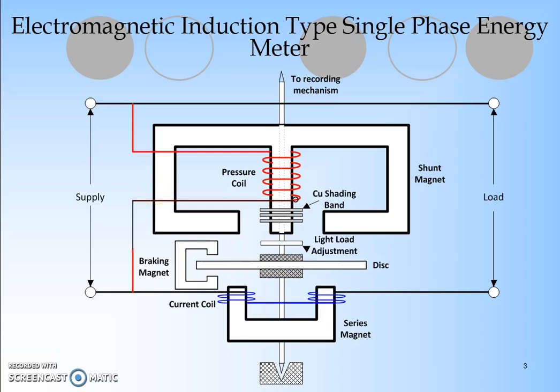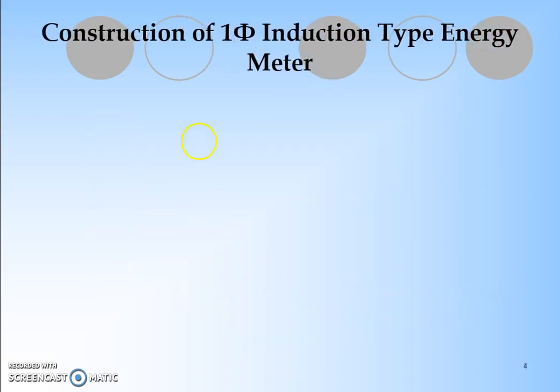Here we are seeing the construction of the electromagnetic induction type single phase energy meter. There are three types of magnets provided. We will see the construction part.